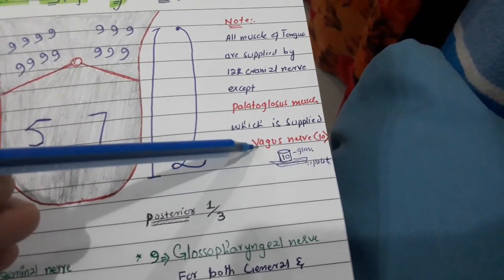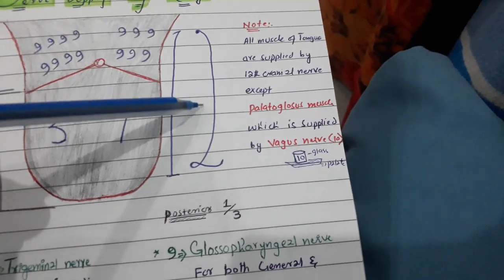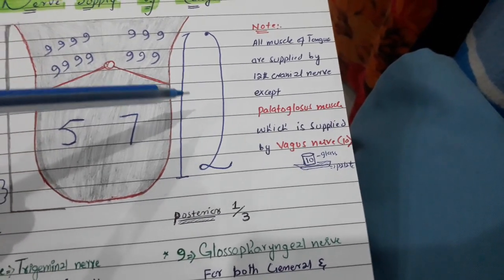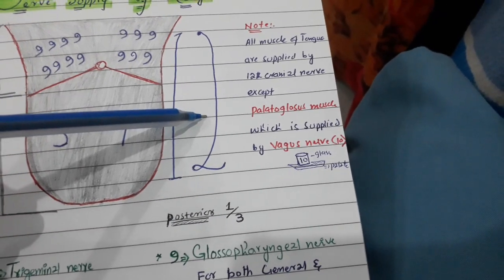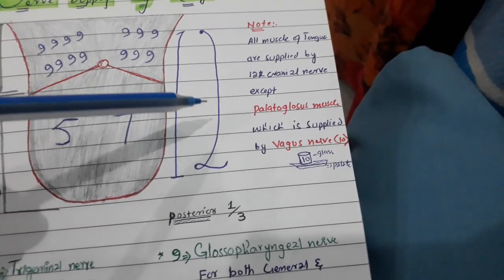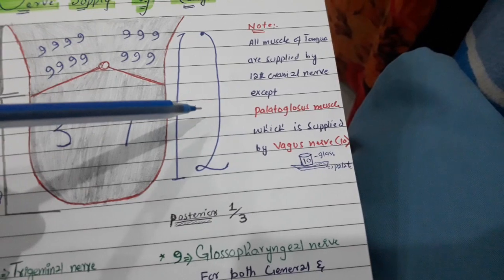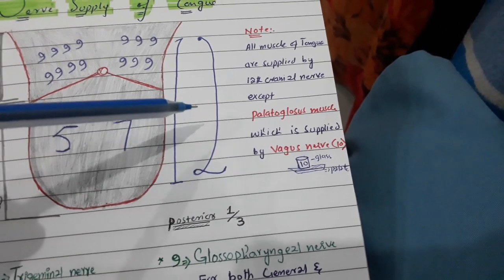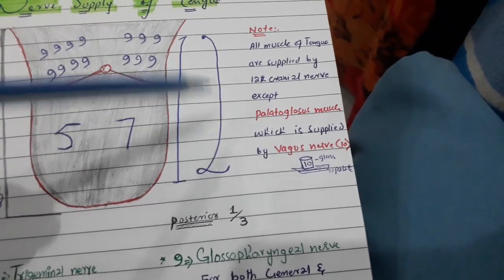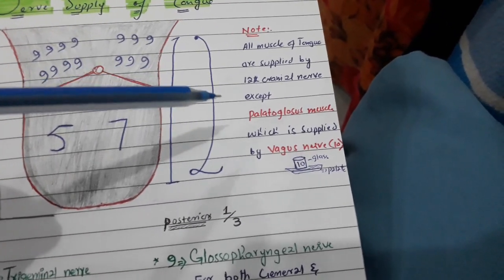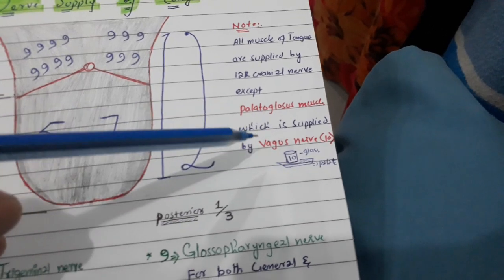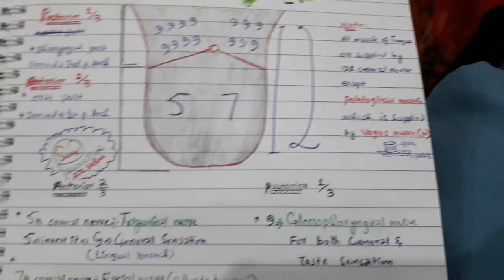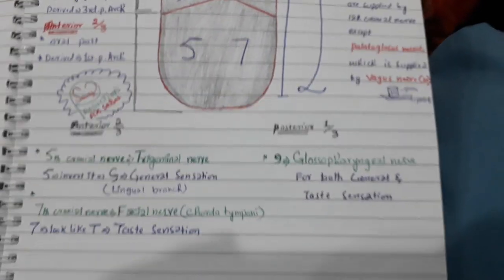All other tongue muscles — such as the genioglossus, hyoglossus, and the longitudinal and transverse muscles — are supplied by the hypoglossal nerve. The only exception is the palatoglossus muscle, which is supplied by the vagus nerve.